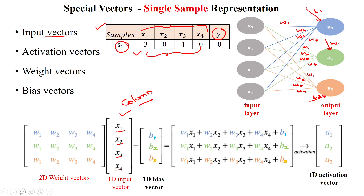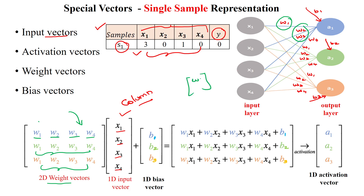What about the associated weight parameters? The weight parameters can be represented using vectors or a matrix. Here we are using 2D weight vectors: W1, W2, W3, W4 for neuron 1, and these four for neuron 2, and these four for neuron 3. We can use a matrix for representing the weight parameters. If you have only one or two parameters, we can represent them as W1, W2. The bias parameters b1, b2, b3 for all three neurons can be represented using a column vector. As per the formula w transpose x plus b, we can represent all terms in the form of a 2D matrix.